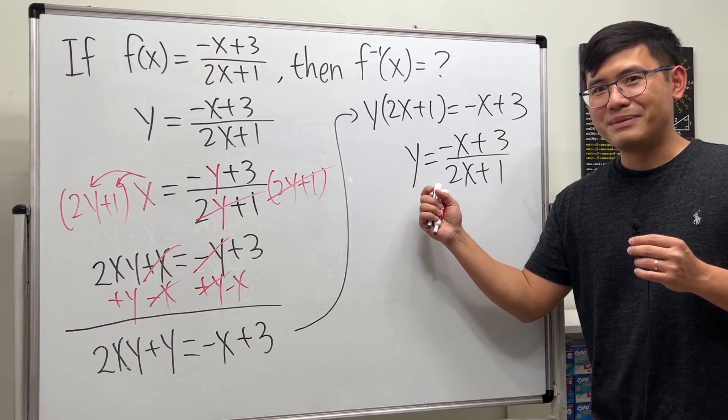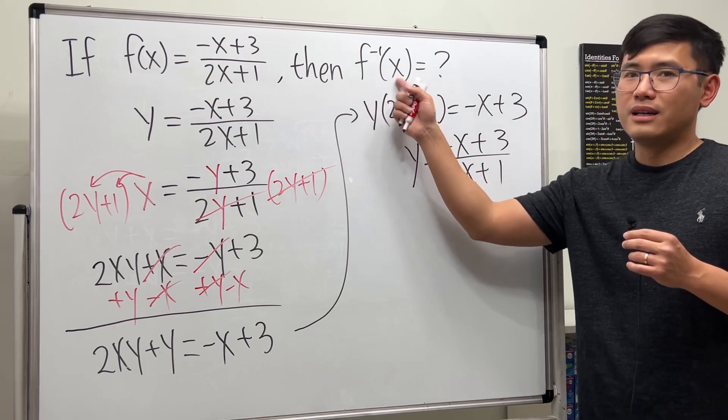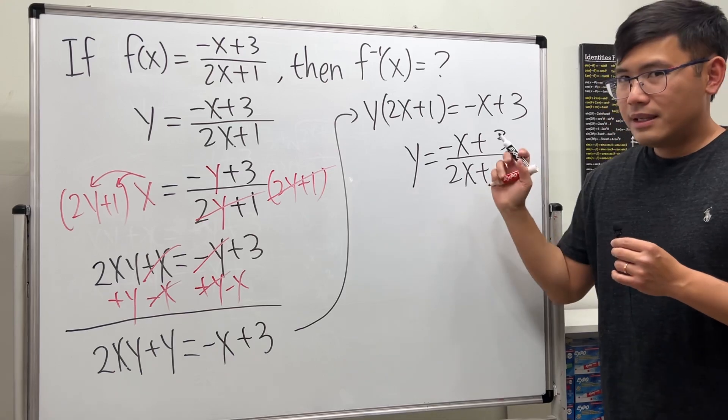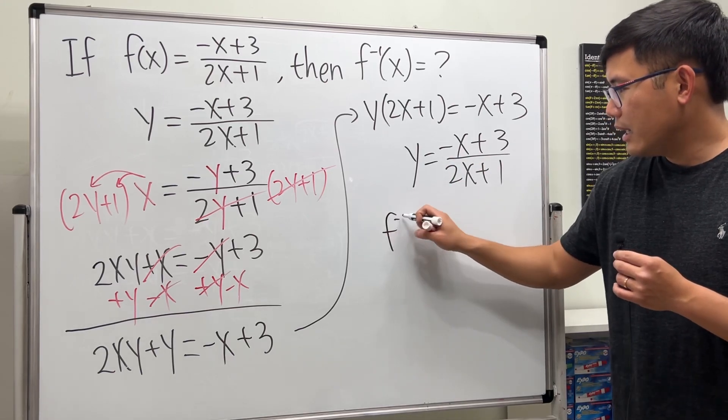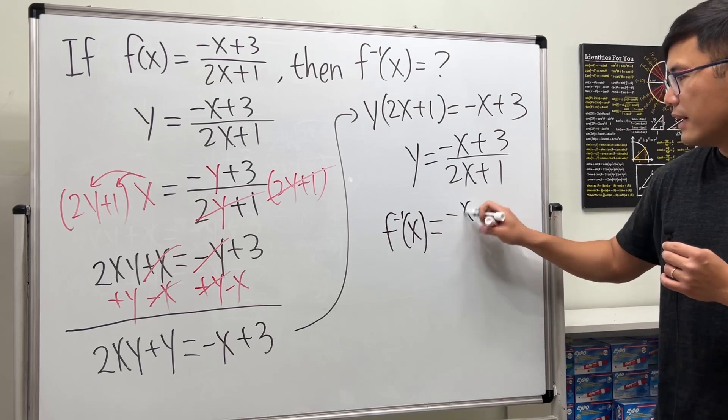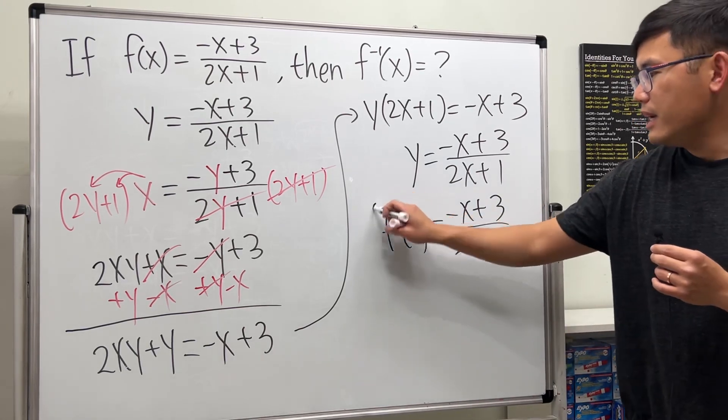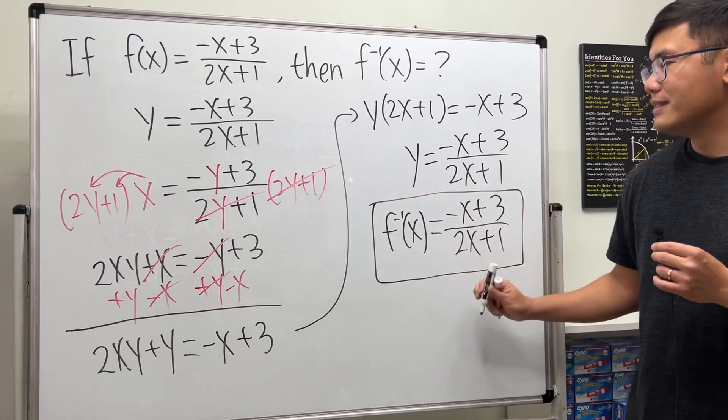Now the final step is we'll just write y as the inverse notation, and that's pretty much the answer. So ladies and gentlemen, our f inverse of x equals negative x plus 3 over 2x plus 1. And with that we are done.